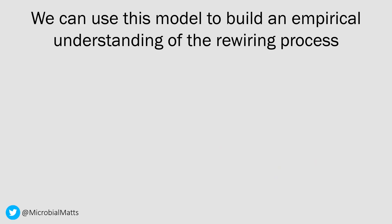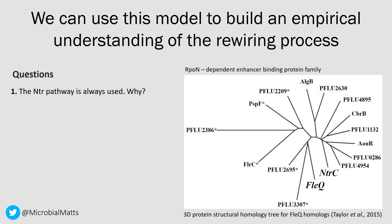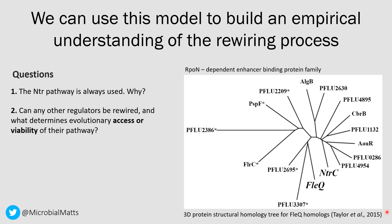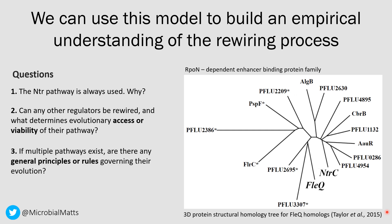This original study provided good experimental data to back up the theoretical model. My PhD set out to use this as a model system for understanding the factors that matter for evolutionary rewiring of a transcription factor. I began with an exploratory question: we always see the NTR pathway being rewired to rescue motility, never any of the other 21 fleQ-homologous transcription factors present in Pseudomonas. This is a 3D structural homology tree of fleQ homologs, and we see that NTRC and fleQ are not the most closely structurally related — other regulators are actually more structurally close to fleQ. So why does evolution never use any of these other regulators? I'm asking: can any other regulators be rewired, and what determines the evolutionary accessibility or viability of one pathway over another?